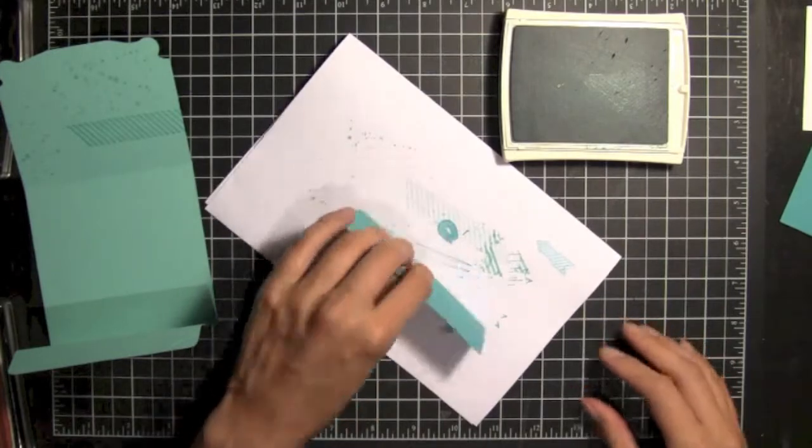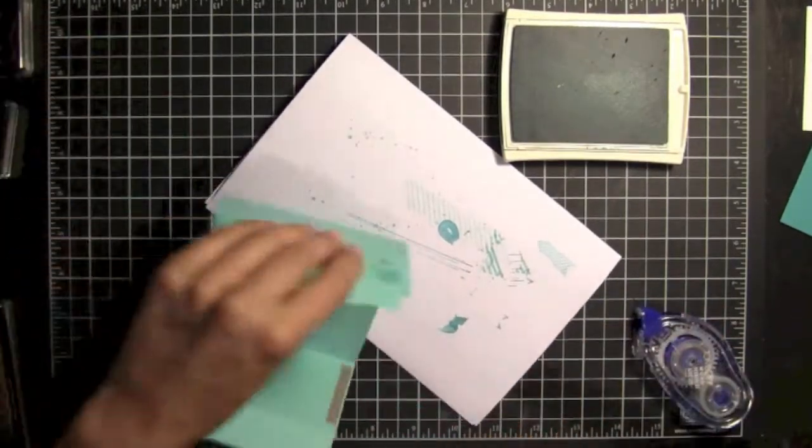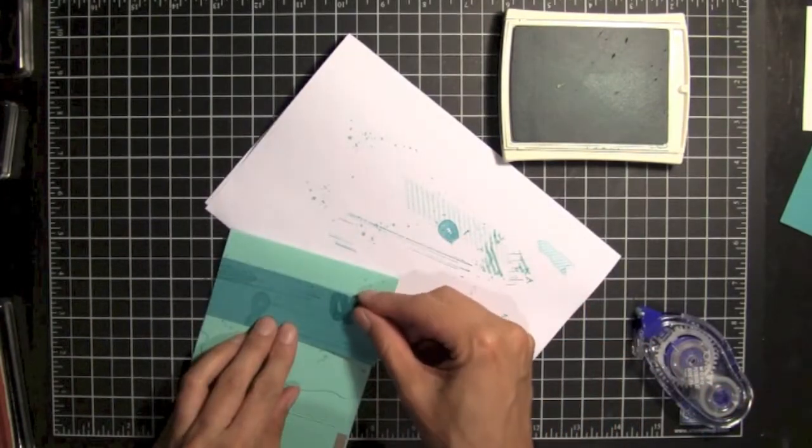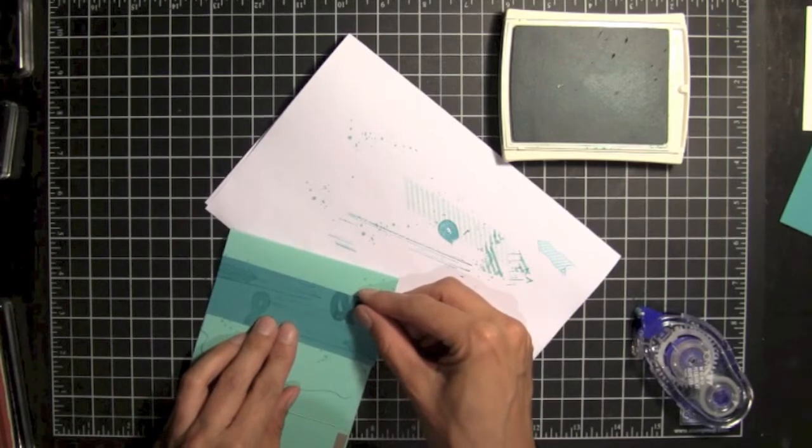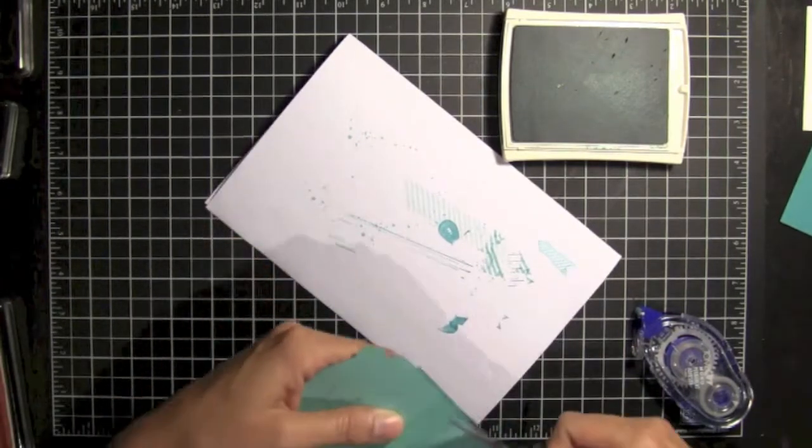All right, and so now we can place this piece on here, on the front. And we'll do it this way. And then we can trim off any excess that we have here.